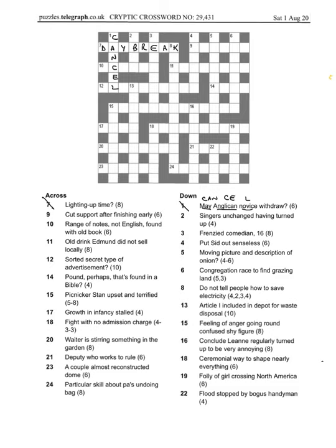Then we'll have a little bit of a jump. I think we'll do 17 across, growth in infancy stalled. Well it's just in the words infancy stalled, it's a cyst which is a type of growth, not a very nice one.